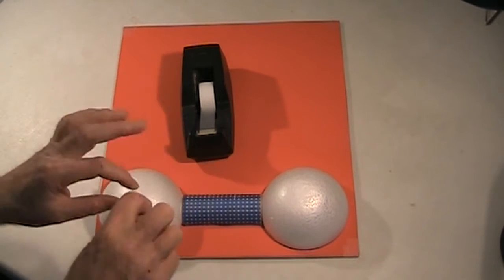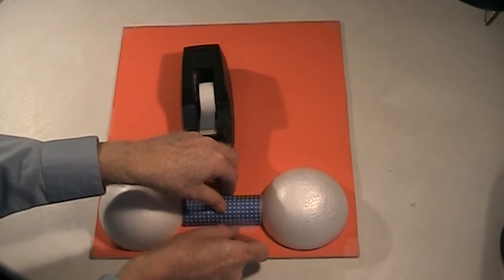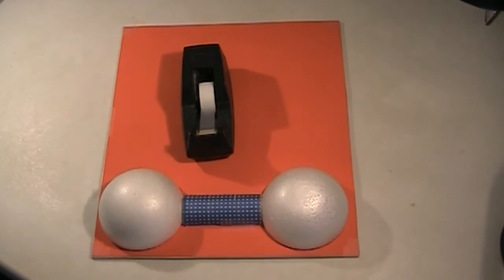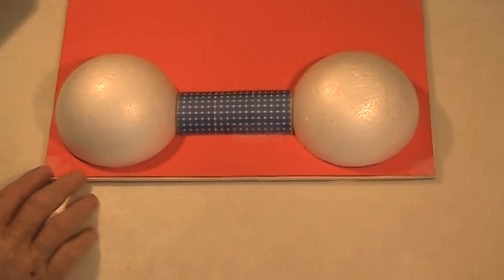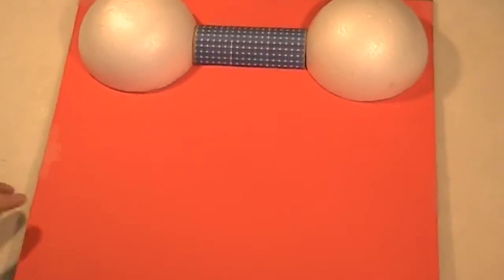Now, to help hold the tunnel on, you can use a little bit of tape to attach it. When you're done with that, turn the board around so the other end is facing you.